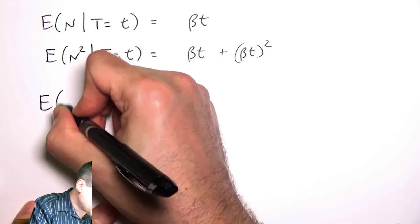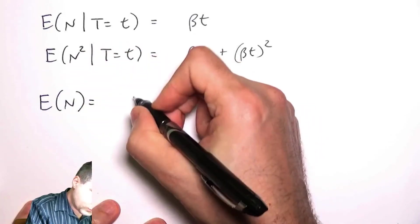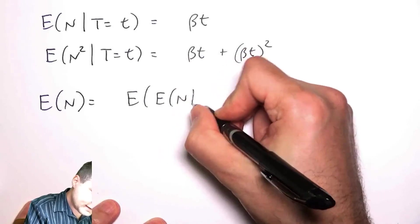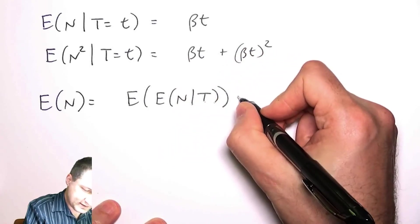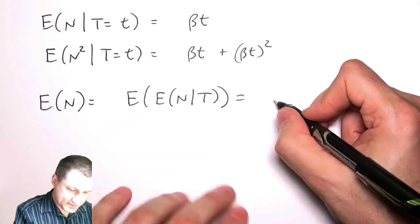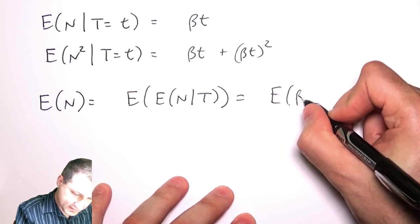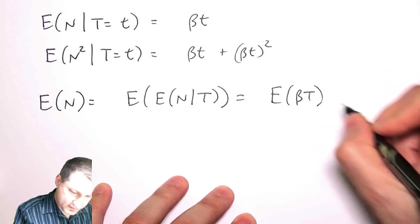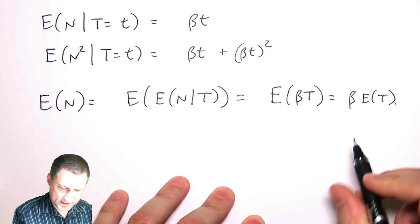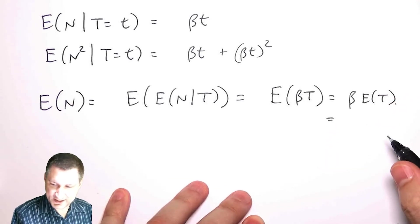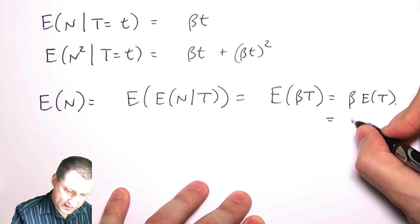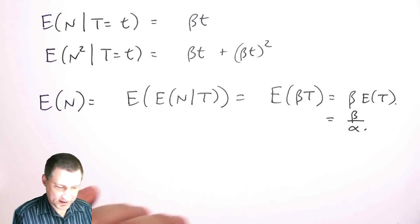So what is the overall expected value of N, right? Well, it should be the expected value of the expected value of N given T. So in this case, this is like saying, well, I know the inner part, that's this part. This is just the expected value of this, which is beta times the expected value of T, right? Which if I go back and think about it, the beta, I guess I told you that this had parameter alpha. So this is like beta over alpha, right?